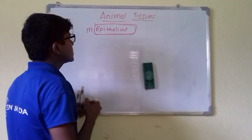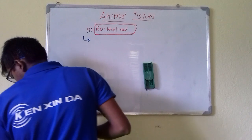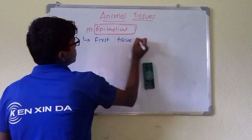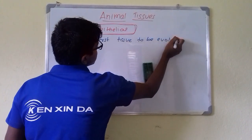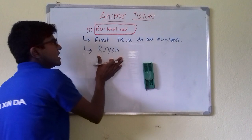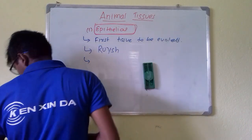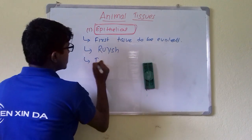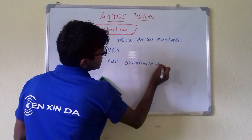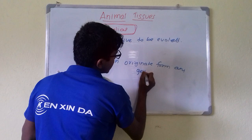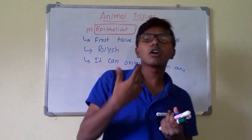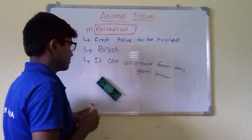Epithelial tissue was the first tissue to be evolved in the process of evolution. A scientist named Ruiz coined the term 'epithelial tissue.' It can originate from any germ layer — either from the ectoderm, mesoderm, or endoderm.